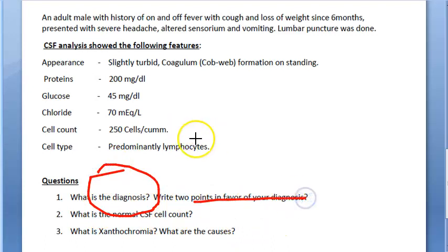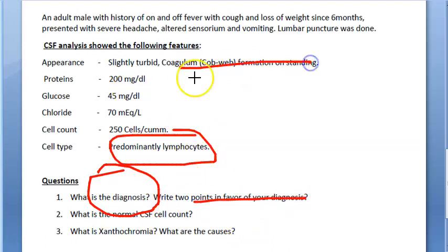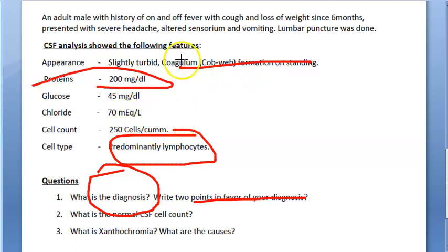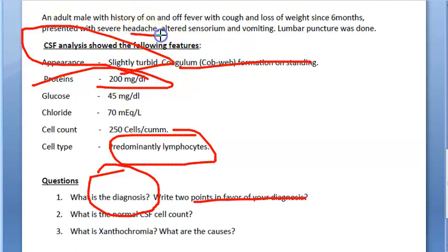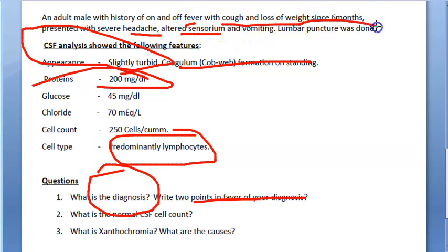The diagnosis is tuberculosis meningitis. Two points in favor: predominantly lymphocytes and increased proteins. The CSF is slightly turbid, the person has headache and altered sensorium. Clinically, the patient also has fever, cough, and loss of weight since six months, all consistent with a tuberculosis case.